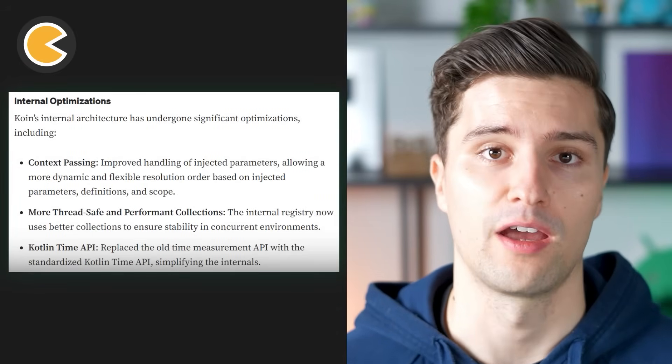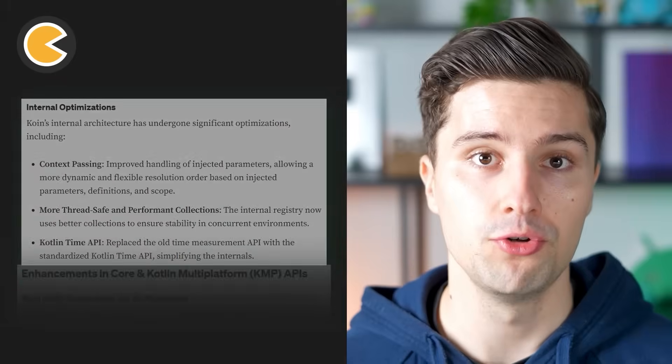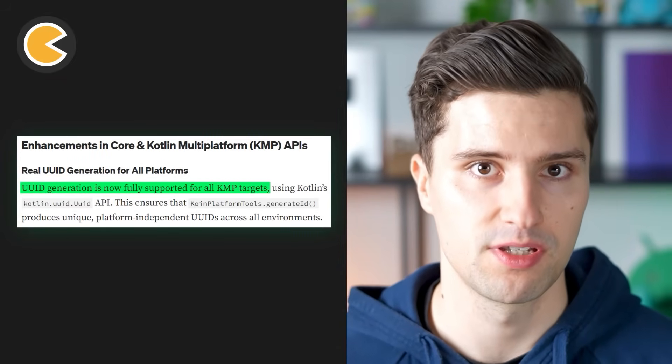Furthermore, the internals of Koin have been simplified. UUIDs are now generated with Kotlin-specific functionality — the Kotlin-specific UUID generator. Originally, every single platform used their own way to generate UUIDs. On Android, this comes from a Java function, and therefore it could not be used in a Kotlin Multiplatform project, which Koin is intended to be used for. But now there is a unified way to generate UUIDs in a platform-independent manner in Kotlin. This really just affects the internals and doesn't have much to do with us as developers who use Koin.